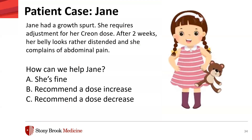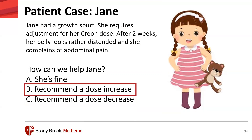Back to patient case: Jane had a growth spurt and requires adjustment for her Creon dose. After two weeks, her belly looks rather distended and she complains of abdominal pain. The answer is B — her dose is too low, resulting in bloating, so she would need a dose increase. For a high dose, she would potentially experience irritation or inflammation.